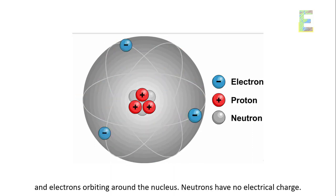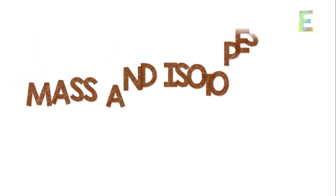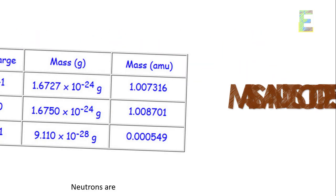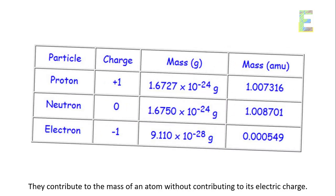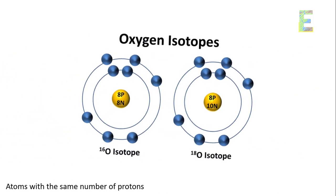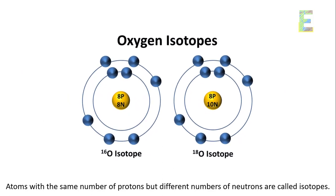Neutrons have no electrical charge. Mass and isotopes. Neutrons are slightly heavier than protons and electrons. They contribute to the mass of an atom without contributing to its electric charge. Atoms with the same number of protons but different numbers of neutrons are called isotopes.